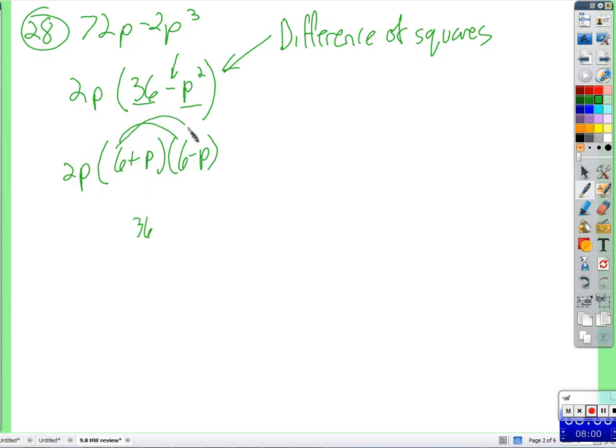And if we were to multiply this out, we'd have 6 times 6 is 36, 6 times negative p is negative 6p, positive p times 6 is positive 6p, so that's where we get our cancellation, and then negative p squared, right? That's what happens when you multiply these things.